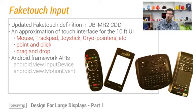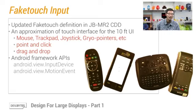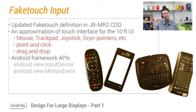These new form factors, like smart TVs, are typically designed for a living room and provide a 10-foot viewing experience — in other words, a non-touch UI. In the new Jelly Bean MR2 CDD, we have a new definition for fake touch input, which is basically an alternative to the conventional direct touch interface, and provides support for point-and-click and drag-and-drop functionalities from a distance.